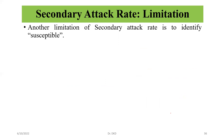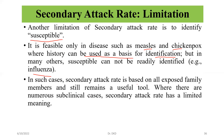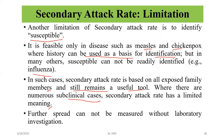Another limitation of secondary attack rate is identifying susceptibles. It is feasible only in diseases such as measles and chicken pox where history can be used as a basis for identification, but in many others susceptibles cannot be readily identified — for example, influenza. In such cases, secondary attack rate is based on all exposed family members. Where there are numerous subclinical cases, secondary attack rate has limited meaning, and further spread cannot be measured without laboratory investigation.